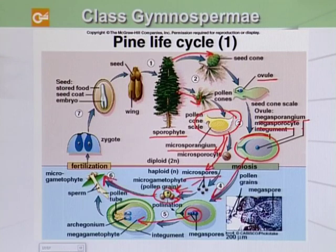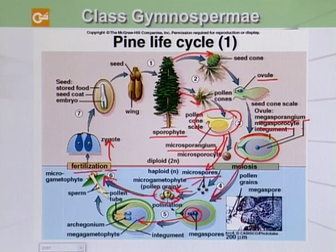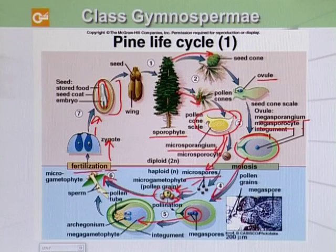When the pollen grains reach the megagametophyte, they fertilize the egg, forming a zygote. It is worth noting that a pollen grain may fertilize more than one egg, but only one zygote remains viable and forms the embryo. This embryo then develops inside the structure called the seed, and on favorable conditions it is converted into the mature sporophyte plant.